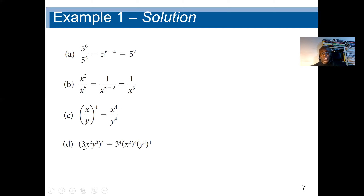Next, we have (3s²y³) raised to the power 4. The power 4 affects everything inside the parenthesis, giving us 3 to the power 4, s squared to the power 4, and y cubed to the power 4. When an exponent is raised to another exponent, we multiply them. So the answer is 81 (which is 3^4), s to the power 8 (2×4), and y to the power 12 (3×4).